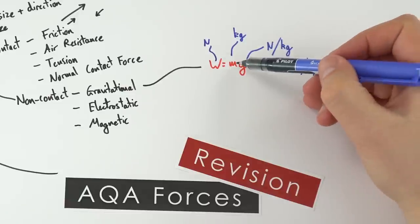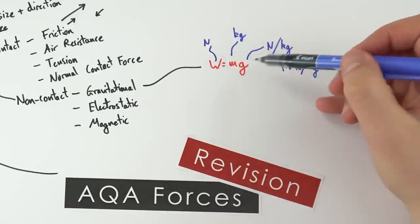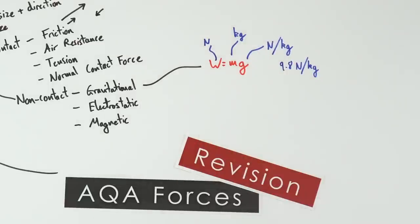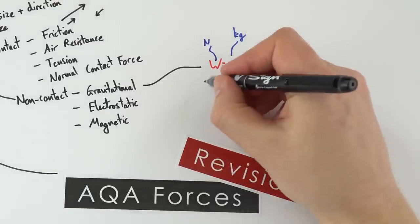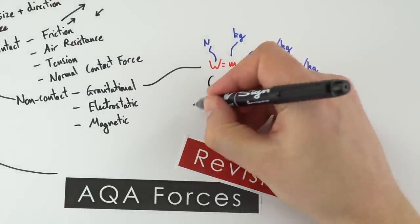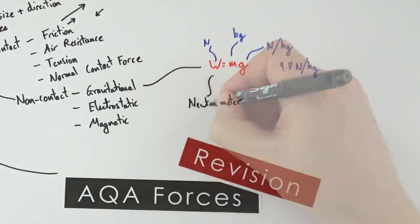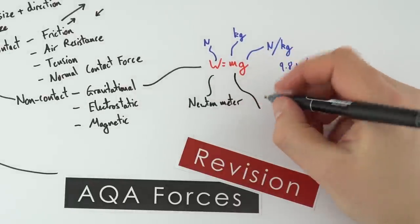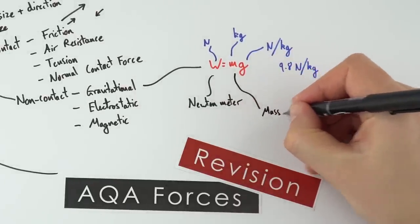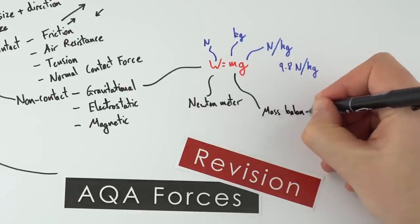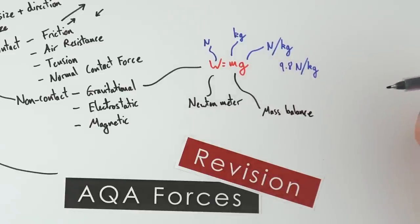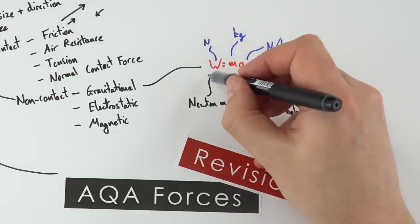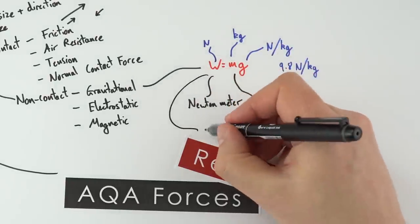To convert from kilograms into Newtons you just multiply by 9.8. To measure the weight of an object you use a Newton metre, whereas to find mass you use a mass balance, which gives a value in grams or kilograms. Remember that the weight of an object acts at the centre of mass.